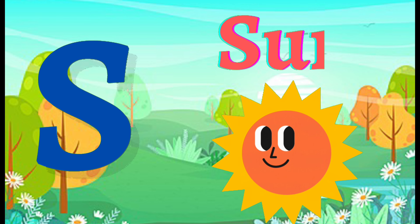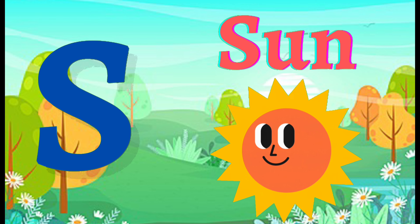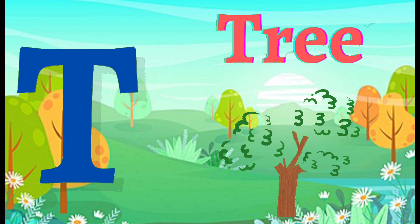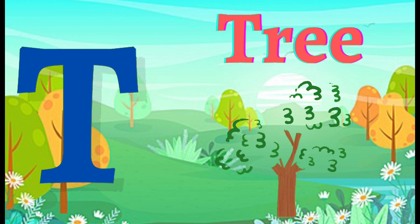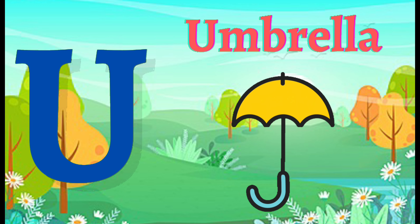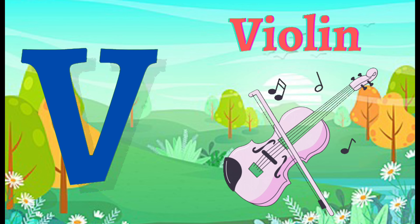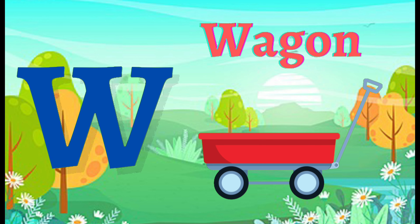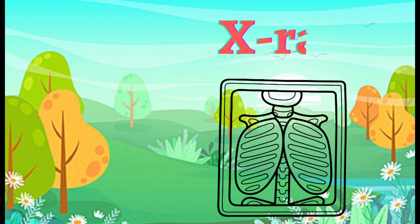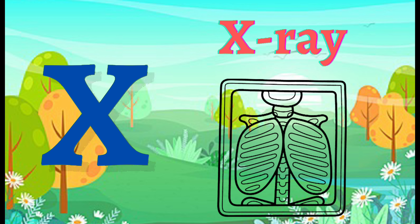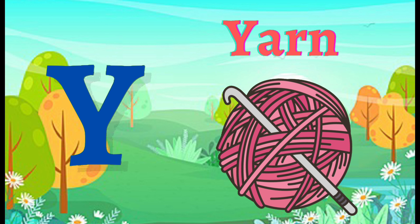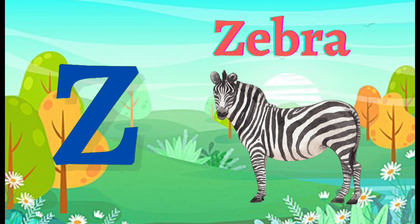S for sun, T for tree, U for umbrella, V for violin, W for wagon, X for X, Y for yarn, Z for zebra.